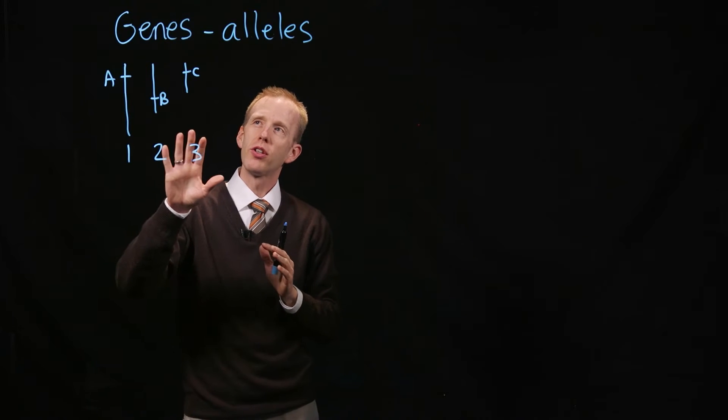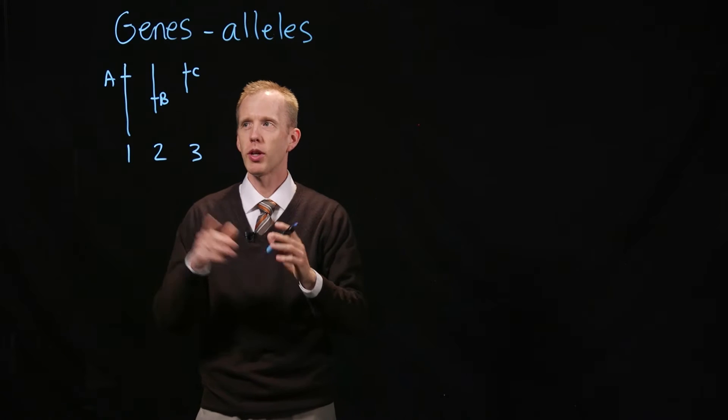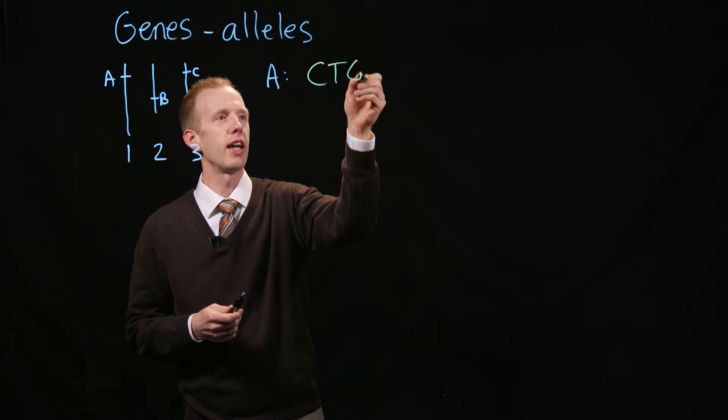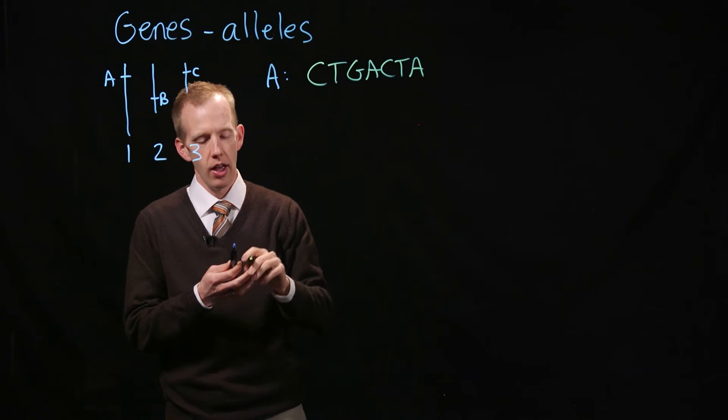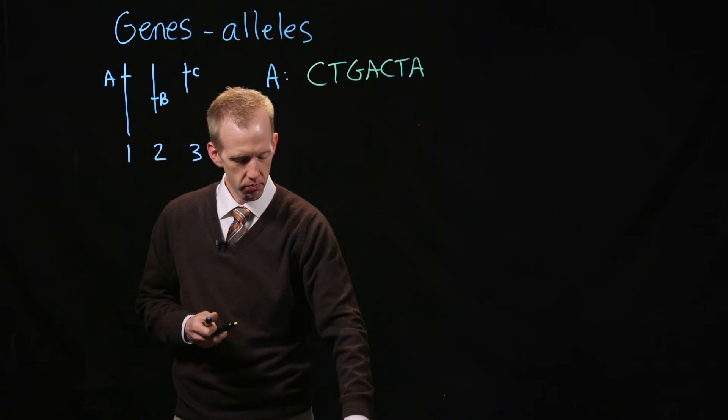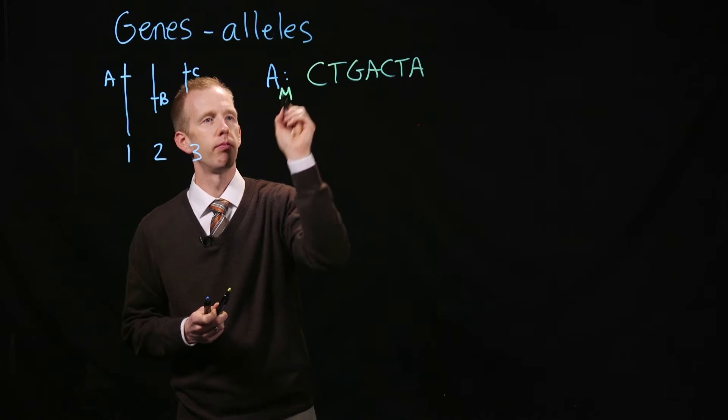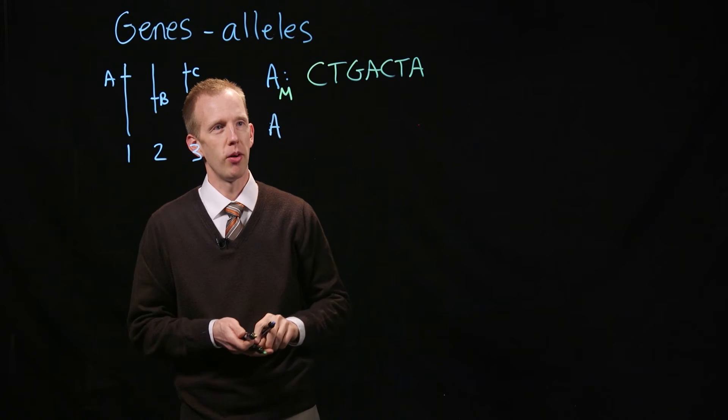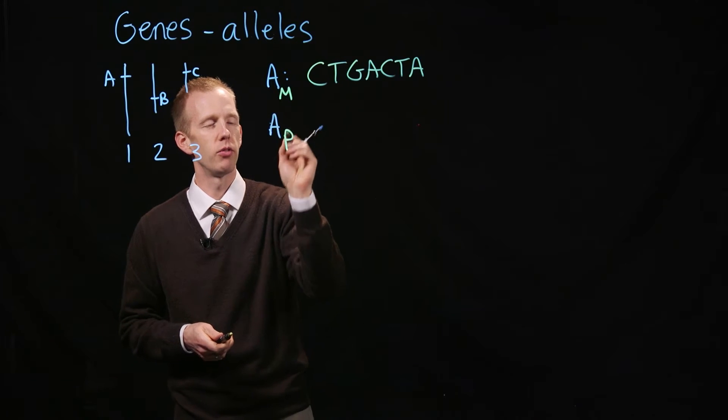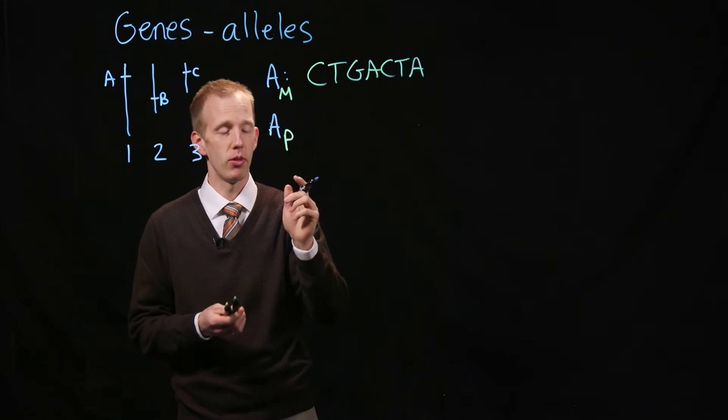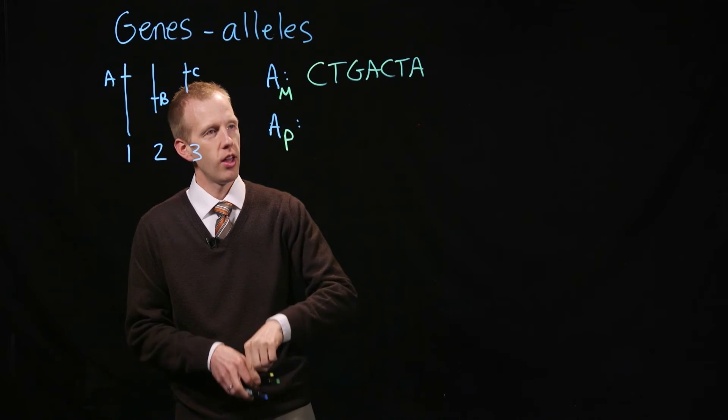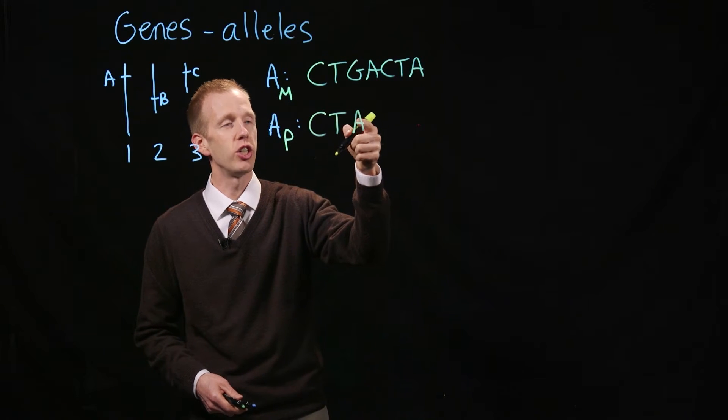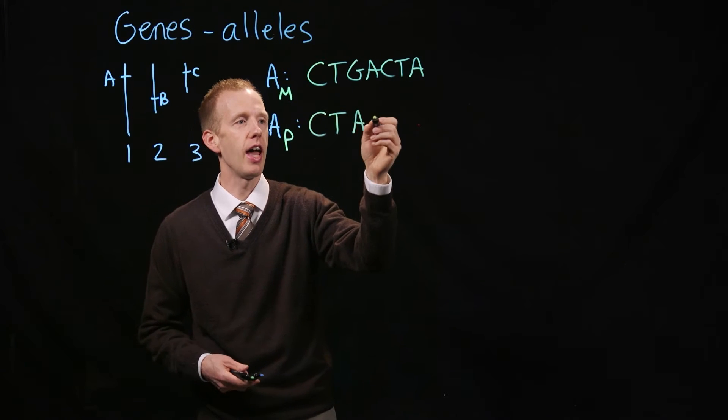These genes are going to differ between different individuals. We could blow up the sequence of gene A and look at a random DNA sequence. Here's gene A from my mother, and my father is genetically different. If we look at gene A from my father, the paternal side, he might have a single nucleotide polymorphism, a SNP, where my mother has a G at that location in gene A, my father has an A.